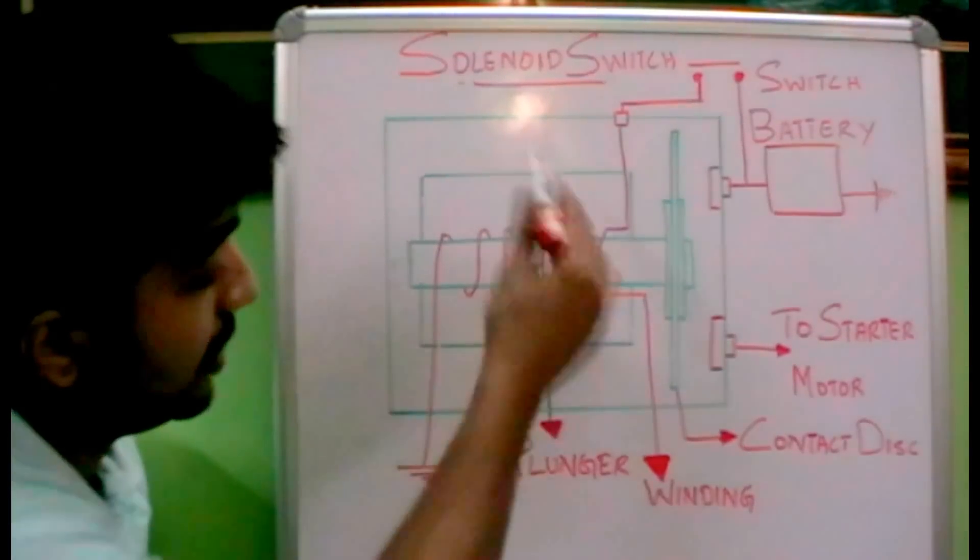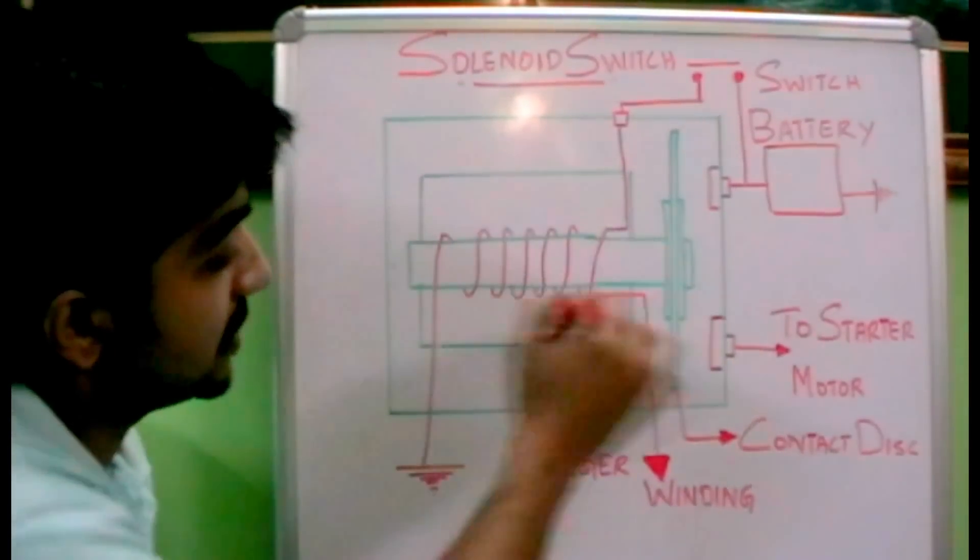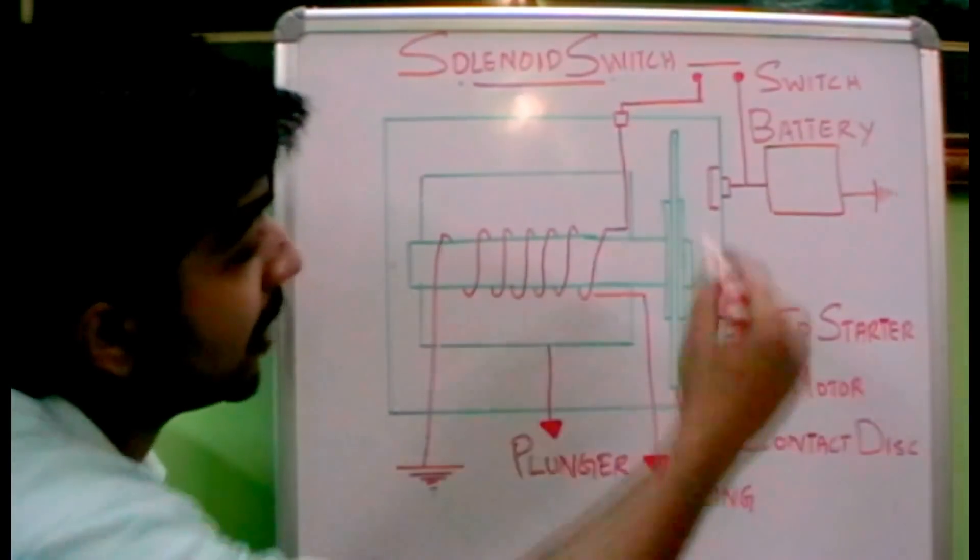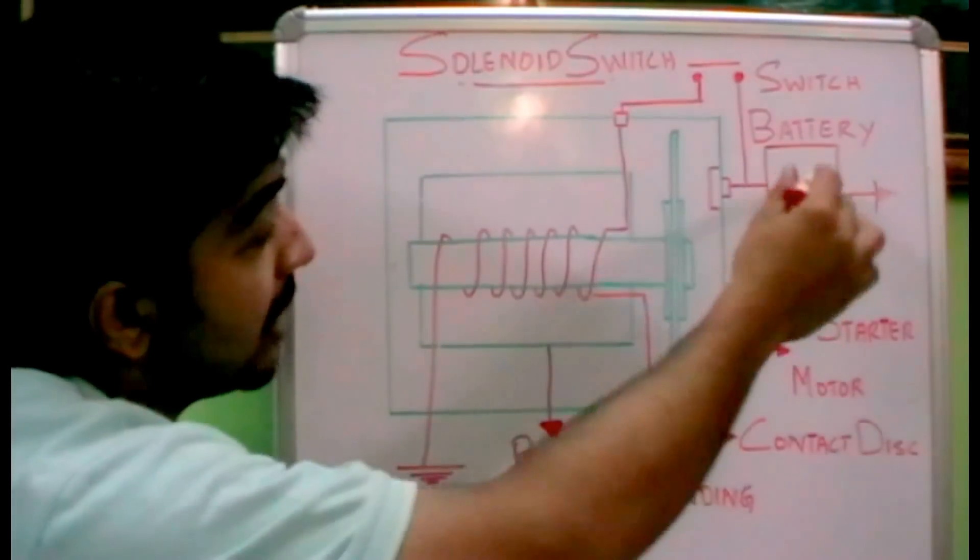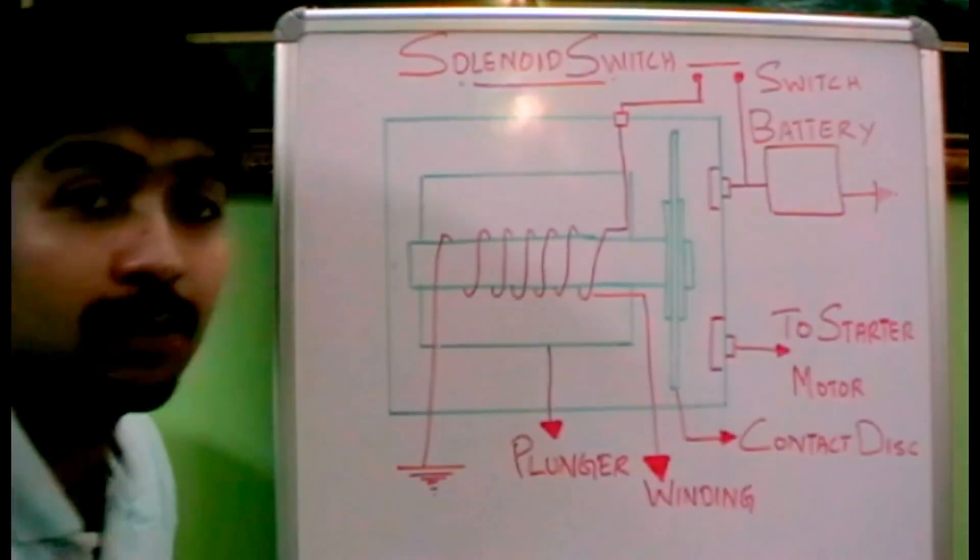So let's see the main components. We have a plunger over here, the windings, a contact disc, and we have the battery, the switch, and the connection to the starter motor.